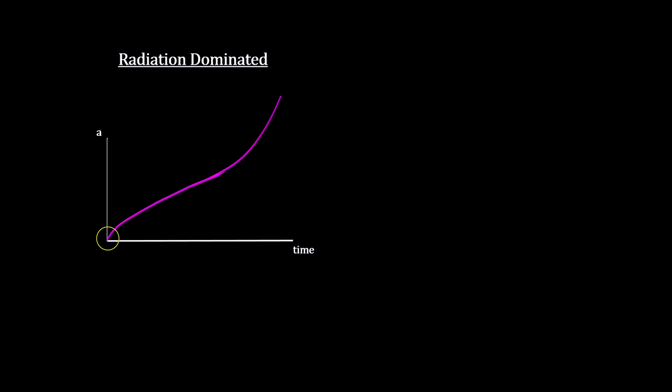In these earliest times, the universe was radiation dominated, and we have a fairly simple relationship between time, scale factor, temperature, and energy that we can use as we cover each of these key areas.